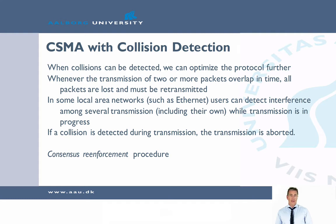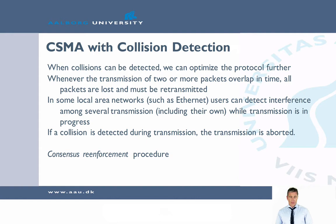Collisions can happen because two senders start transmitting at the same time, or because there can be senders and transmitters who cannot hear each other. When we can do collision detection, we can optimize the protocol even further. The problem is that when transmissions of two or more packets overlap in time, they are lost and must be retransmitted. In some local area networks — Ethernet is an example — we can detect interference among several transmissions even while the transmission is in progress. So if a collision is detected during transmission, the transmission is aborted, so we don't have to keep sending a packet that we know will not be transmitted correctly.